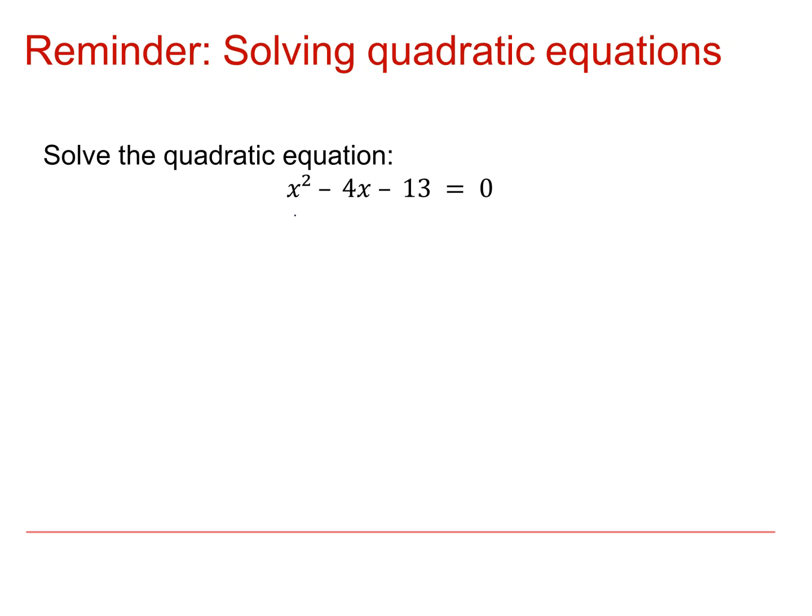OK, this is what we get. Completing the square, we have x minus 2 all squared. That gives us x squared minus 4x as we wanted, but it also gives us a plus 4, which we don't want. And then we've got the minus 13.